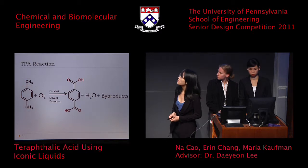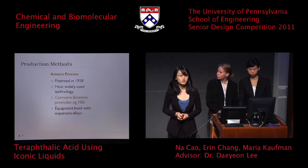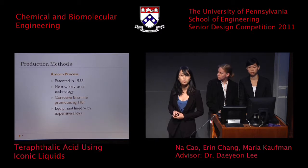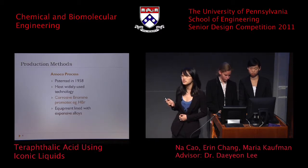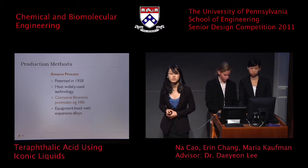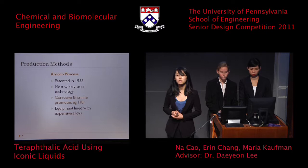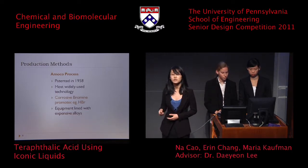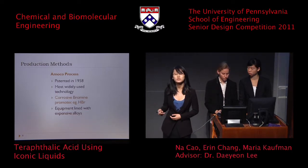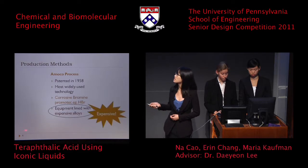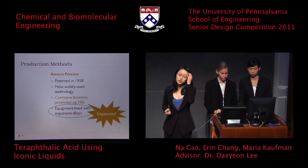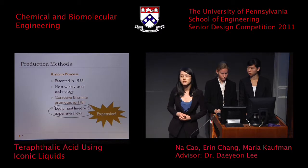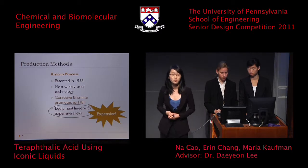The most current process that uses this oxidation method to produce TPA is called the Amoco process. However, there is a major disadvantage: it uses a highly corrosive bromine promoter such as hydrogen bromide. This requires all of its equipment to be lined with very expensive titanium alloys, which increases the capital cost investment for the Amoco process.